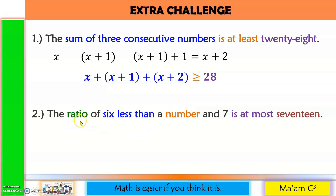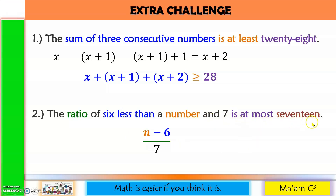Number two: the ratio of 6 less than a number and 7 is at most 17. Note that 'than' is a switch word, so we write the number first then subtract 6, giving (x − 6)/7 ≤ 17. Since 17 is the maximum and the value could be equal to or less than 17, we use less than or equal.